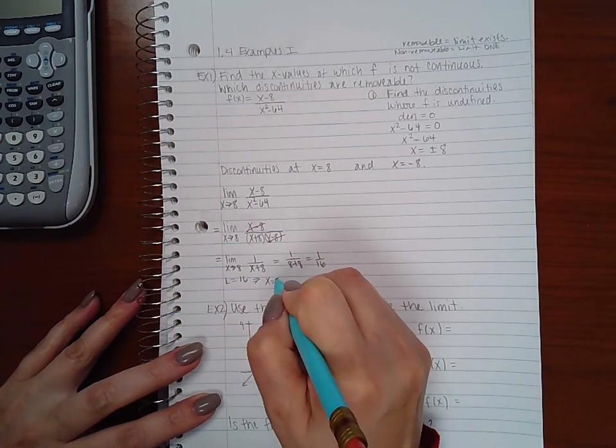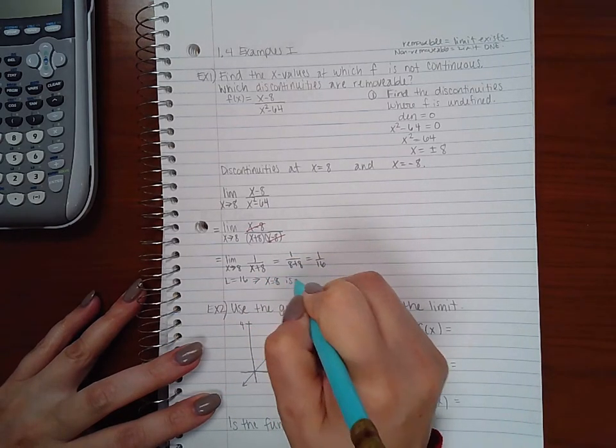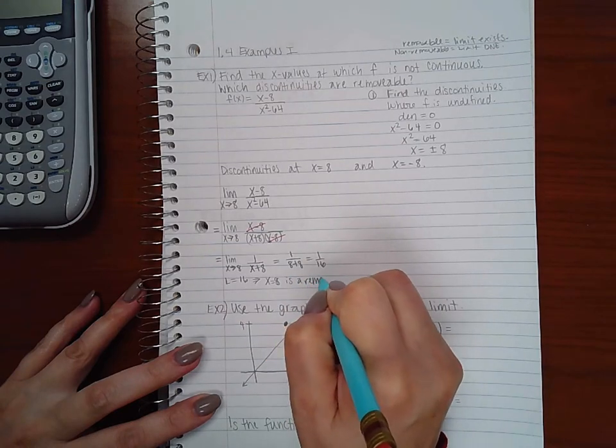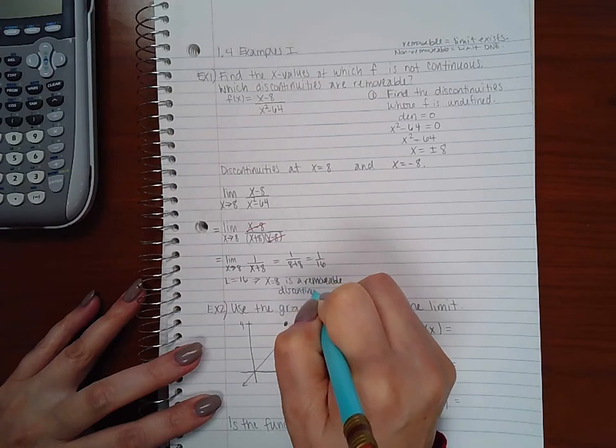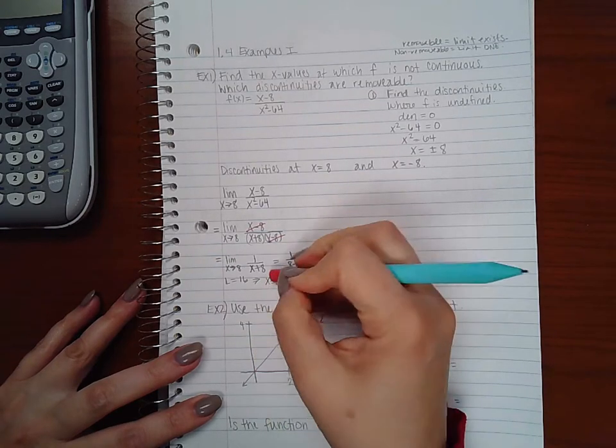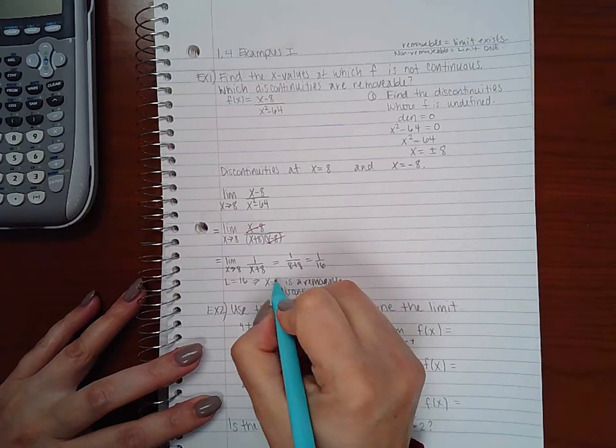And now I can do the direct substitution, so I get 1 over 16, which means the limit is 1 over 16. That implies that x equal to 8 is a removable discontinuity.